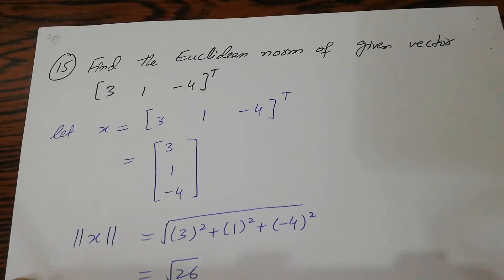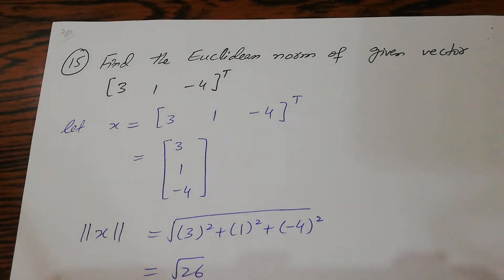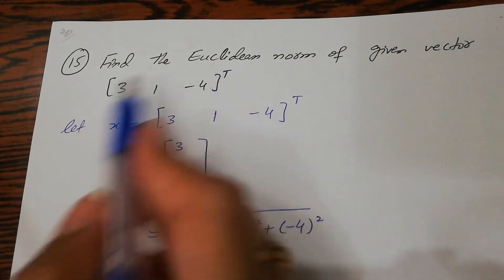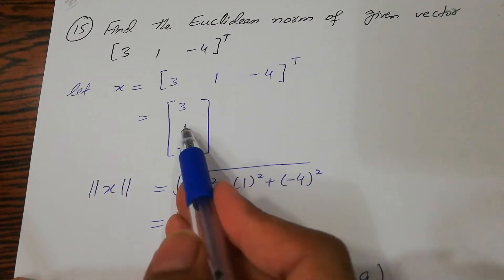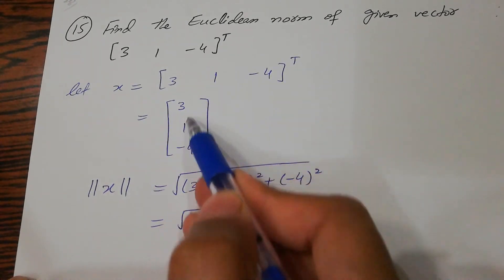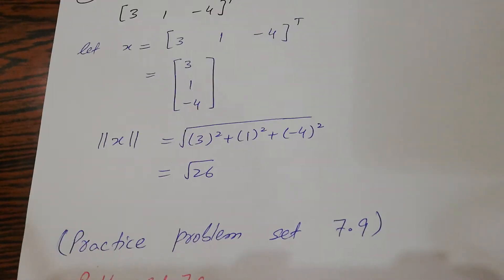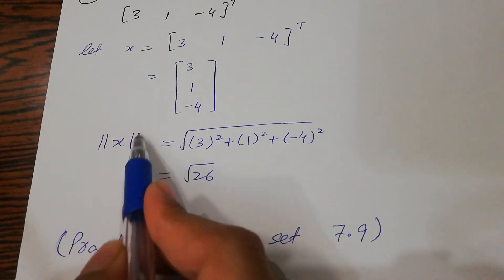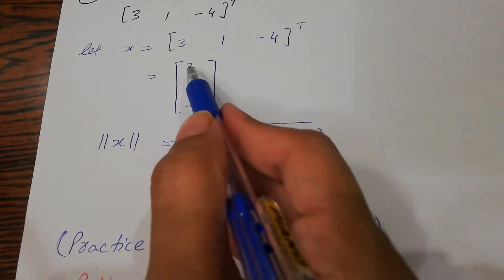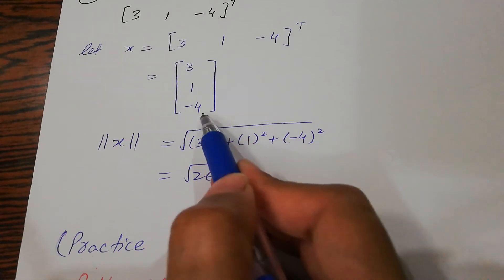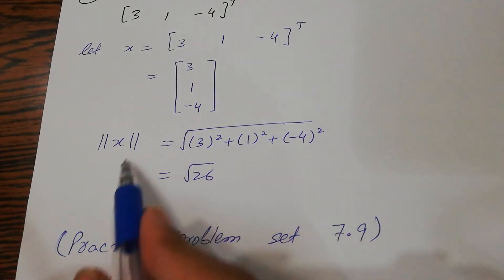Now come to the Euclidean norm. How do we find the Euclidean norm of this vector [3, 1, -4] transpose? Take the square root of 3 squared plus 1 squared plus -4 squared. This is the Euclidean norm.